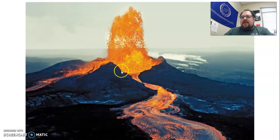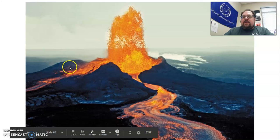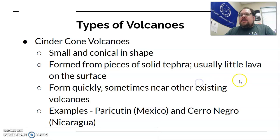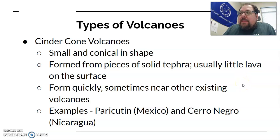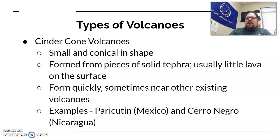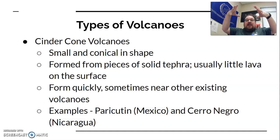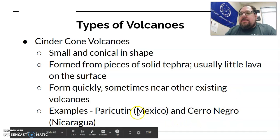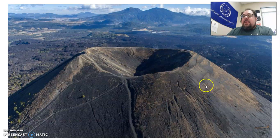You can see the lava running down the sides — it's very wide and flat. Cinder cone volcanoes are the second type — less common, smaller, and not massive mountains, though they're large relative to us. They're conical, like the classic volcano shape kids make for projects. They're formed from solid tephra with very little lava — rock gets pushed to the surface and piles up quickly, sometimes on the sides of larger volcanoes. Examples include Paricutín in Mexico and Cerro Negro in Nicaragua.